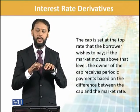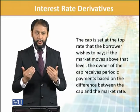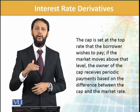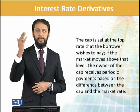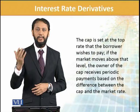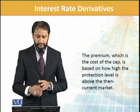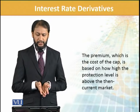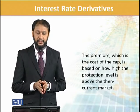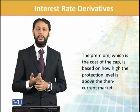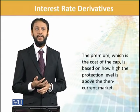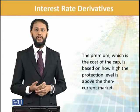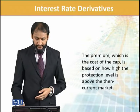So you are locked in above that rate. The settlement happens periodically, and you do not have to bear interest rates beyond a certain level. The premium, which is the cost of the cap, is the protection level above the current market. Whatever premium you have to pay — that is your additional cost over existing rates, and you will be bearing that.